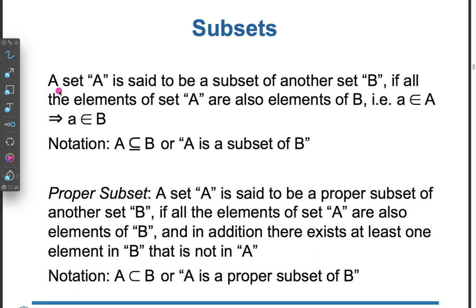Subset: A set A is said to be a subset of another set B if all the elements of set A are also elements of B. That is, if x belongs to A, it implies that x belongs to B. Notation: A ⊆ B.